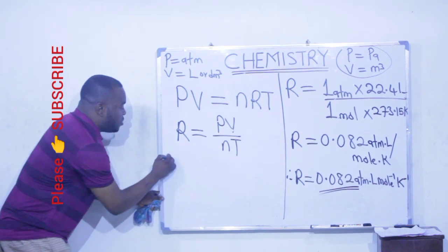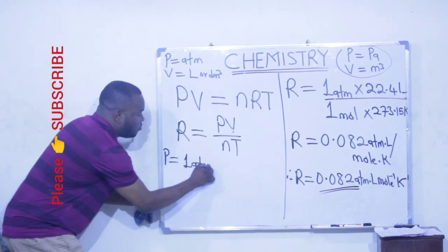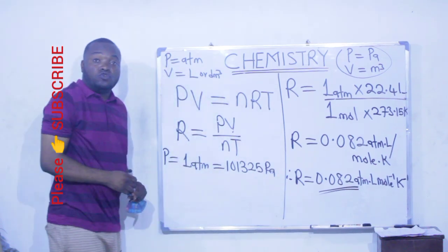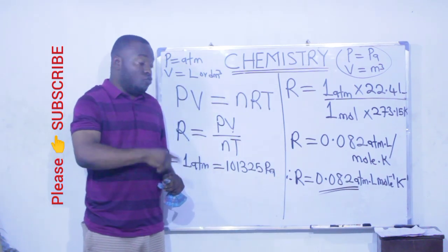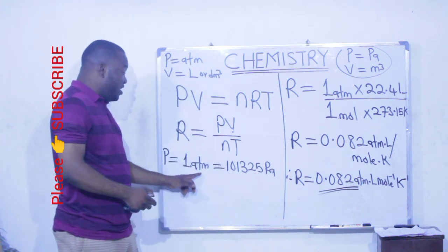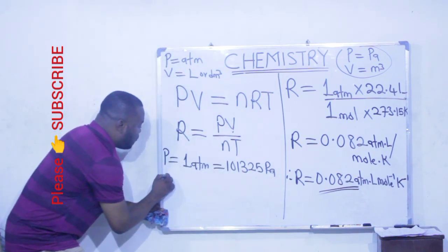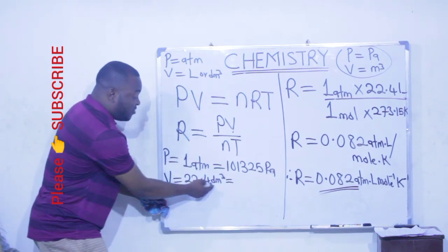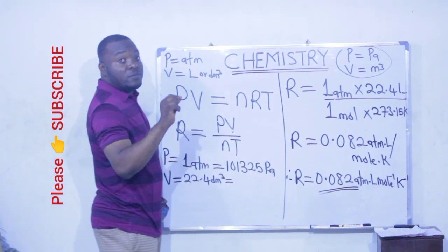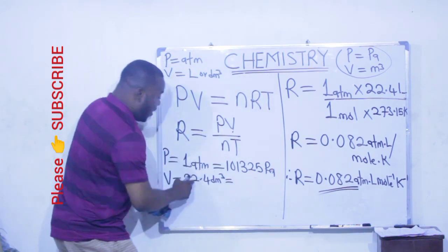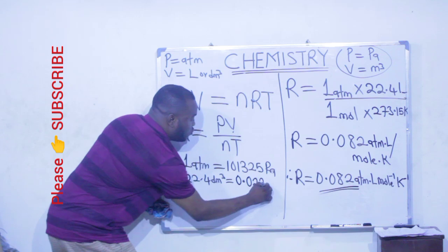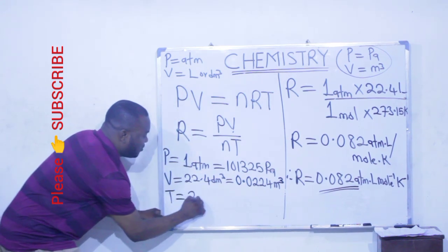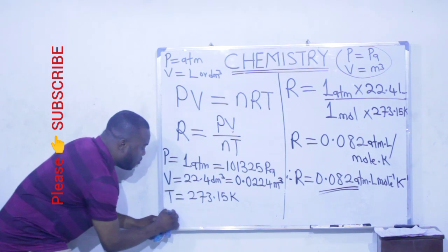Now, at STP, you remember that pressure is one atmosphere, which is equivalent to 101325 Pascal. Remember, to convert from atmosphere to Pascal, you multiply by 101325. So 1 atm is equal to 101325 Pascal. Now, our volume, which is 22.4 dm cube or liter, if we convert to meter cube, that means dividing with 1000. If I divide this by 1000, I will have 0.0224 meter cube. And my temperature remains 273.15, while the mole remains 1.